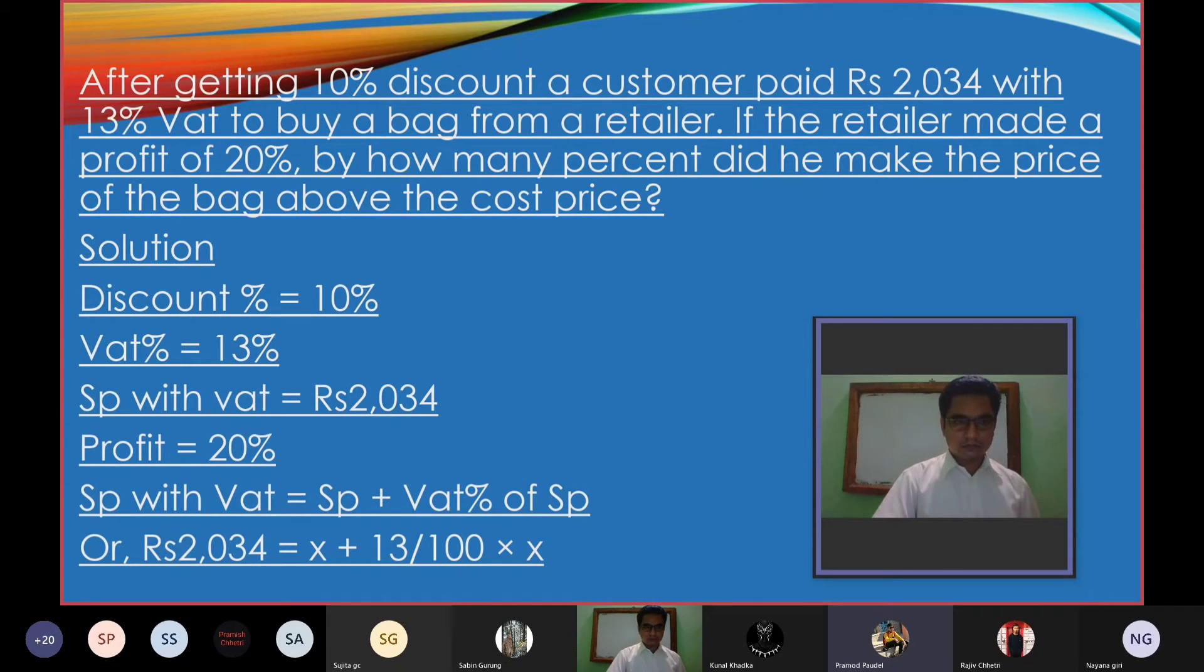Solution: Discount percent equals 10%, cashback percent equals 13%, SP with cashback equals 2,034, profit equals 20%. SP with cashback equals SP plus cashback percent of SP. Or Rs 2,034 equals x plus 13/100 multiplied by x.